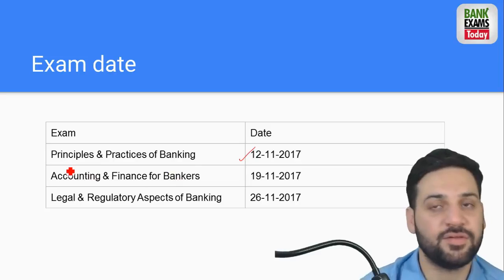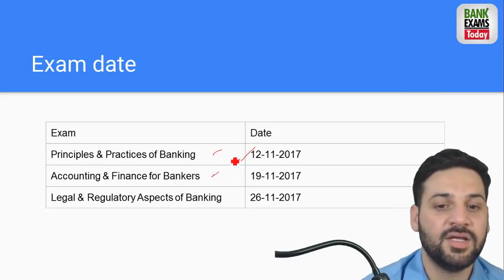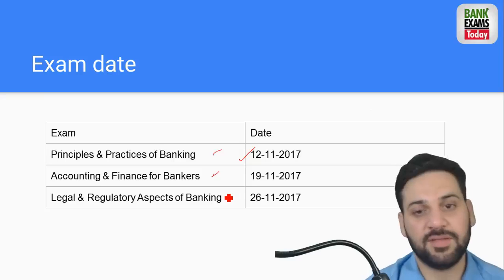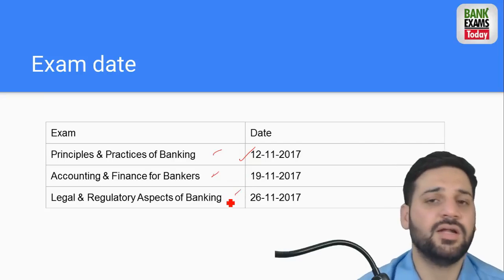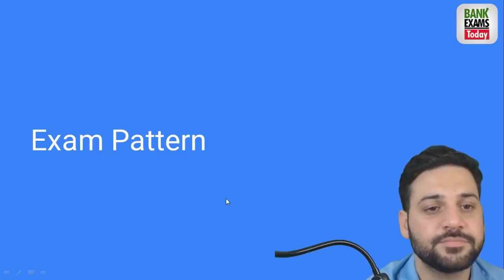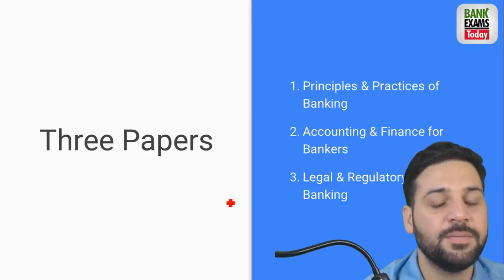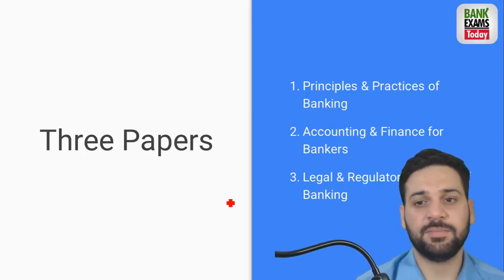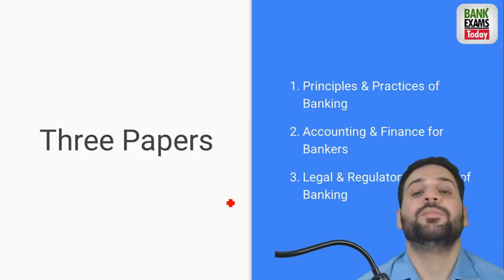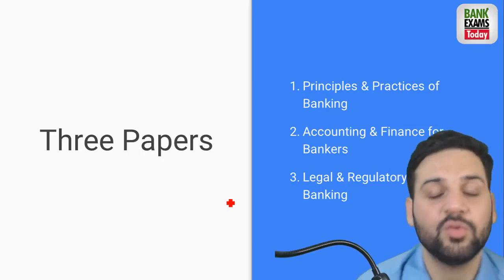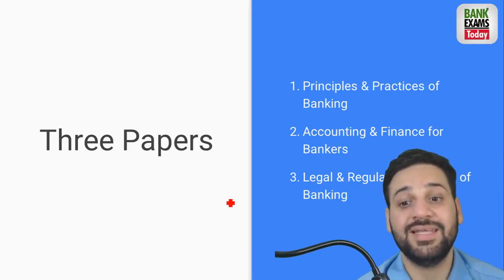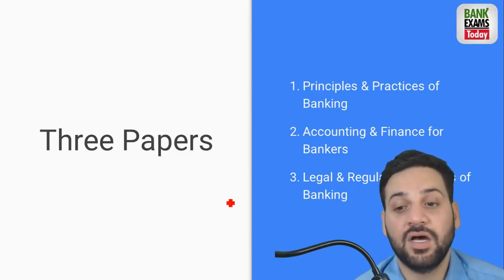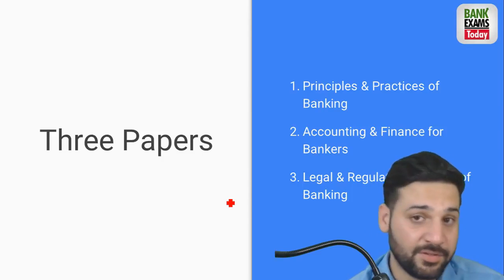There are three papers: Paper 1 - Principles and Practices of Banking; Paper 2 - Accounting and Finance for Bankers; Paper 3 - Legal and Regulatory Aspects of Banking. We will discuss the exam pattern and the syllabus for these three papers - principles and practices of banking, accounting and finance for bankers, and legal and regulatory aspects of banking.